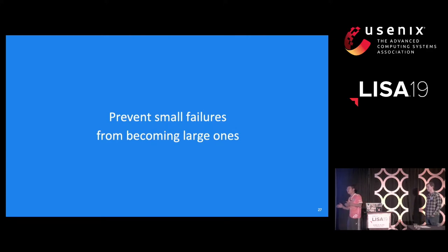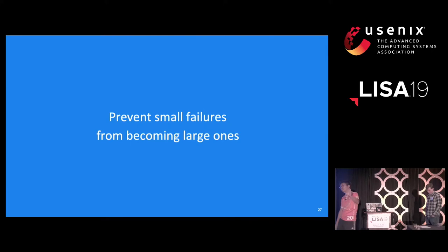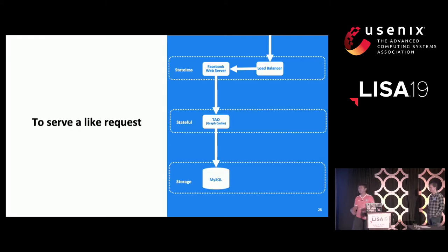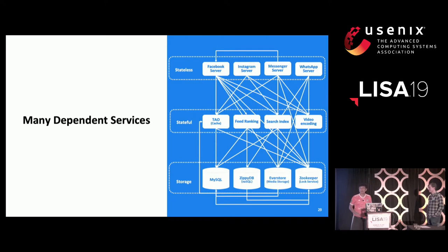We must be able to prevent small failures from becoming large ones. This problem is actually pretty simple if you think about it: I have a switchboard powering a lot of MySQL servers, and another powering a lot of TAO servers — why can't TAO and MySQL just swap their machines so each one has a smaller amount per switchboard? But there are a couple of challenges: to serve a like request you need four services, but to serve Facebook, Instagram, Messenger, and WhatsApp there are thousands and thousands of services needed.